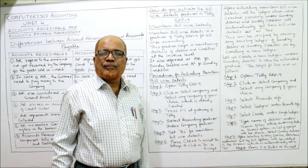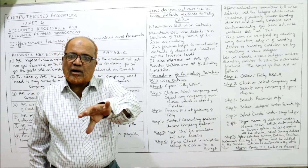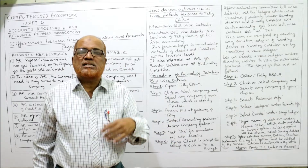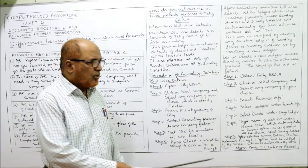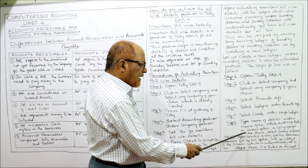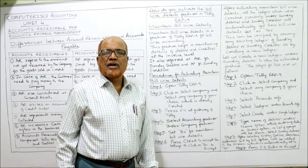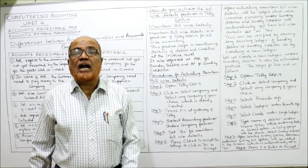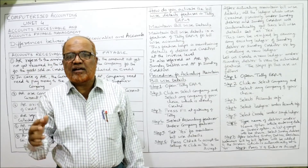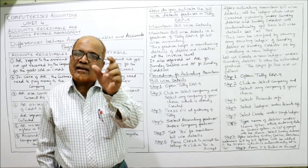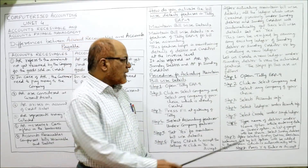Type the name of the debtor. While entering the under option, a list of groups will be shown. Select sundry debtors if you are opening a debtors account. After entering the name, the next option is under — click under and select sundry debtors from the list.